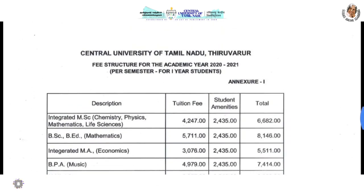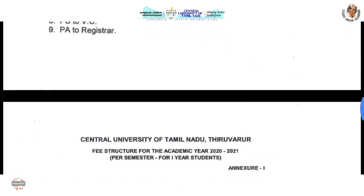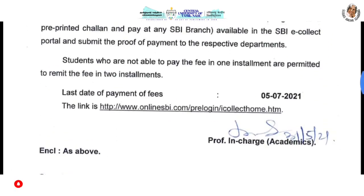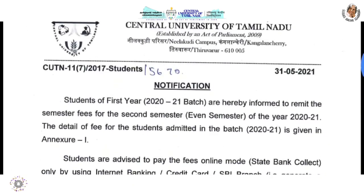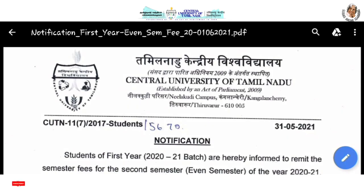This is the first semester — there is a semester, but there are fees. The odd semester — first, third, fifth, seventh — is a little less than the even semester. The even semester is the second, fourth, sixth, and eighth semester.